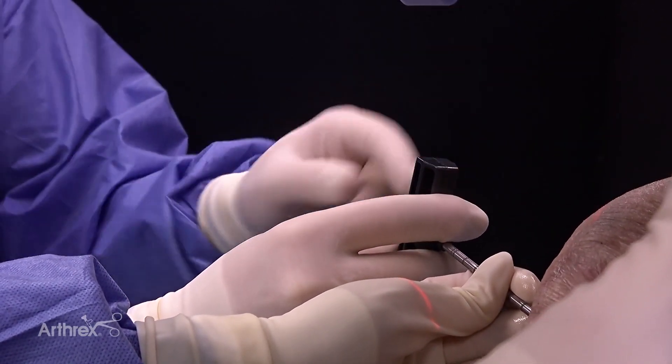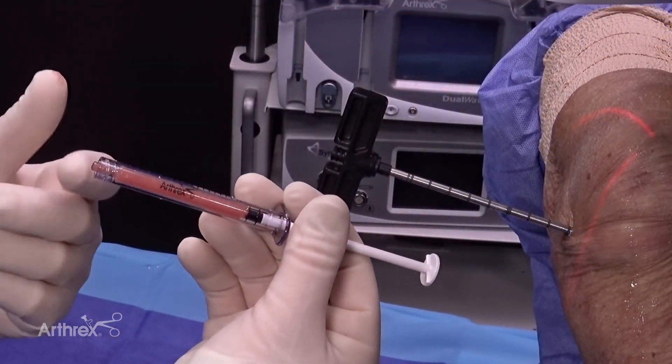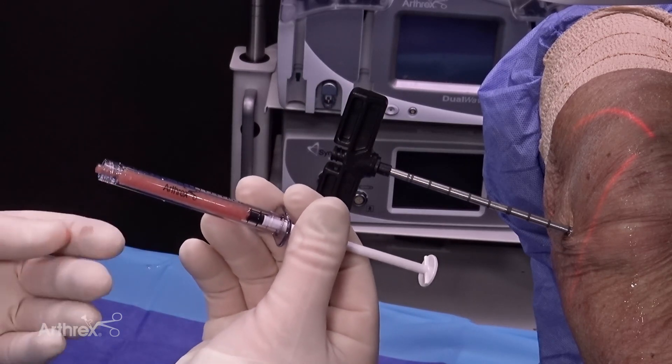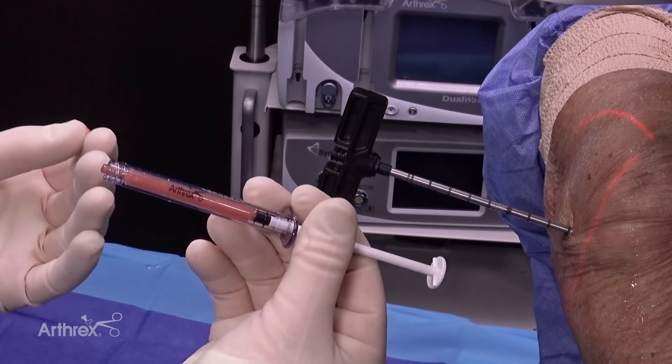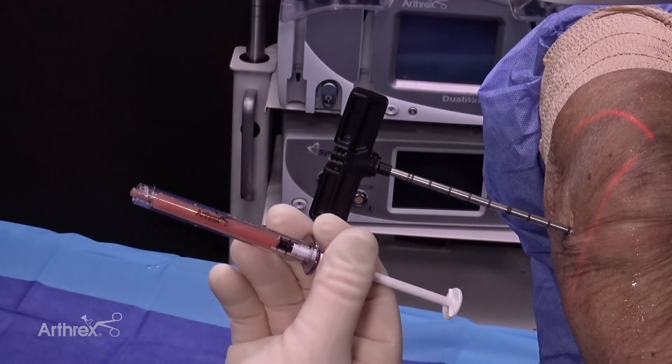And now we've got our delivery sleeve and we can now introduce our biologics. Now this is purposely radiopaque so that we can see how it fills the cavity. But this is representative of a DBM and autologous fluid slurry that we're then going to inject through the delivery sleeve.